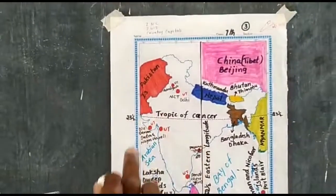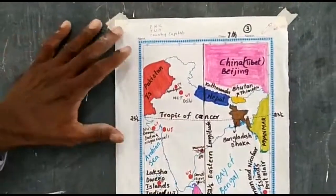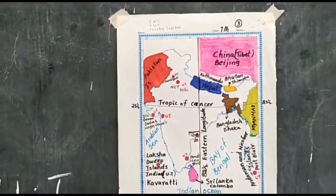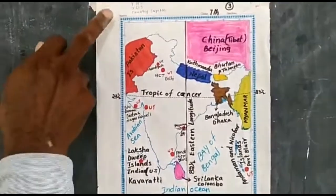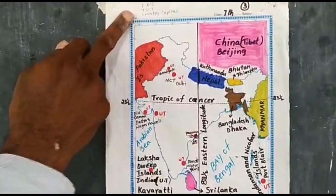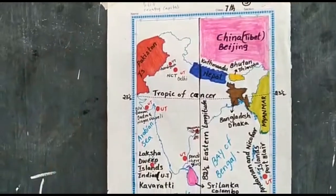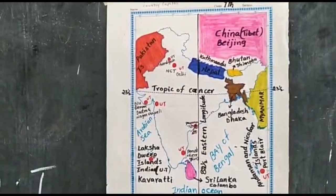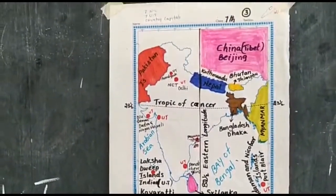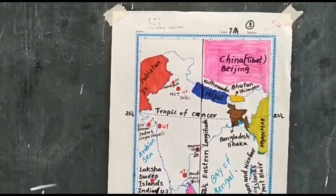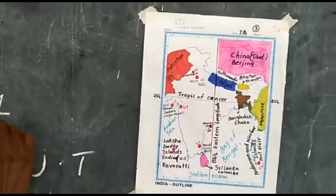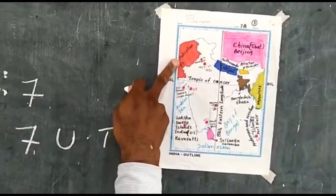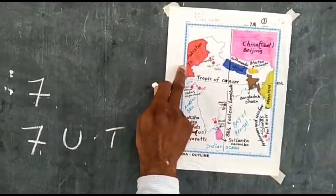This picture explains about 7 national capital cities, 7 union territories, and neighboring country capitals. There are 7 neighboring countries. First: Pakistan — capital city Islamabad. China — capital Beijing. Nepal — capital Kathmandu.